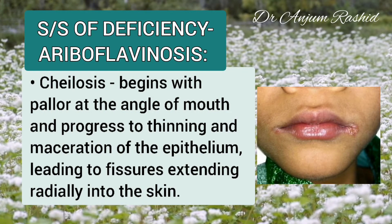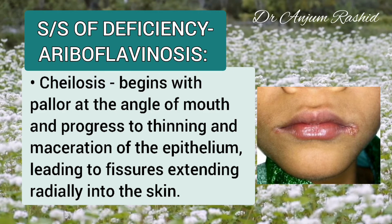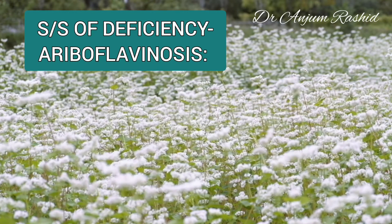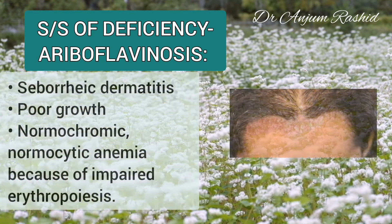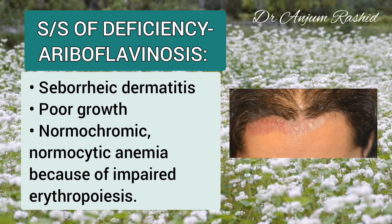Cheilosis begins with pallor at the angles of the mouth and progresses to thinning and maceration of the epithelium, leading to fissures rapidly extending into the skin. There may also be seborrheic dermatitis and poor growth.